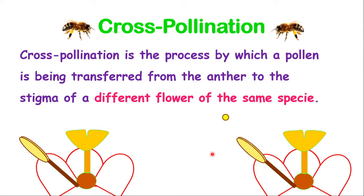Cross-pollination is a process by which a pollen is being transferred from the anther to the stigma of a different flower, but they must be of the same species. For example, a cucumber plant cannot be crossed with a citrus plant. They may be different varieties, but they must be the same species.